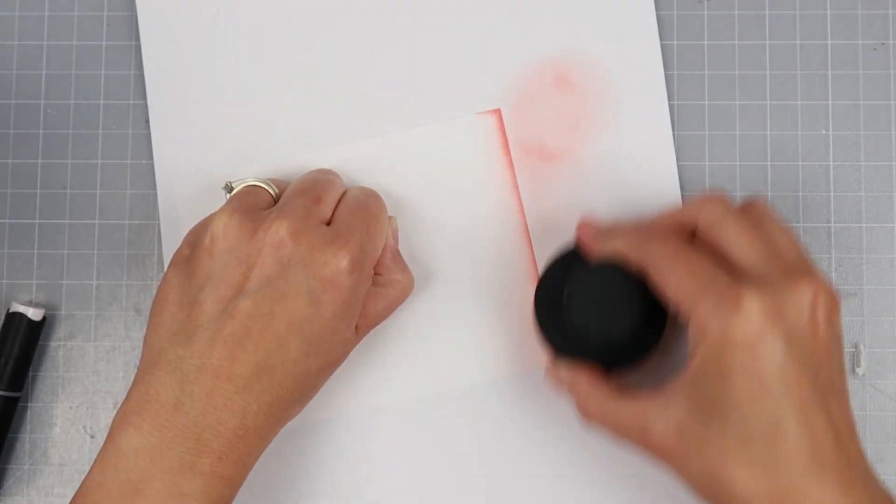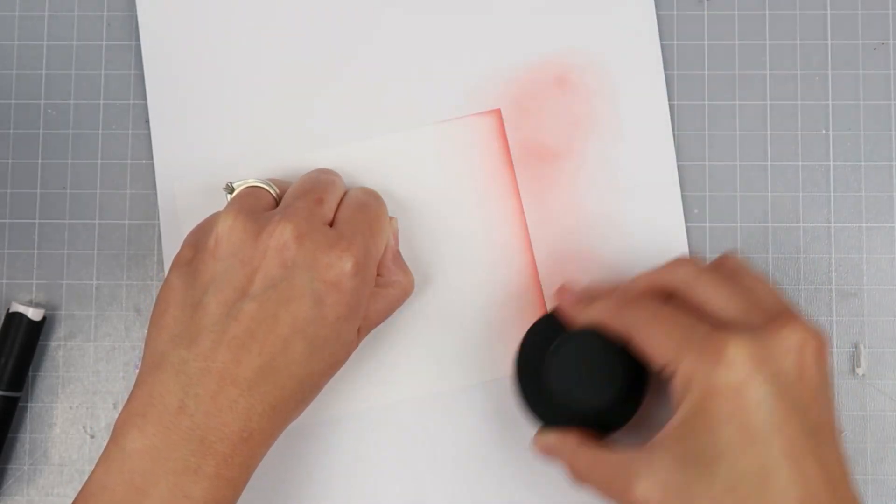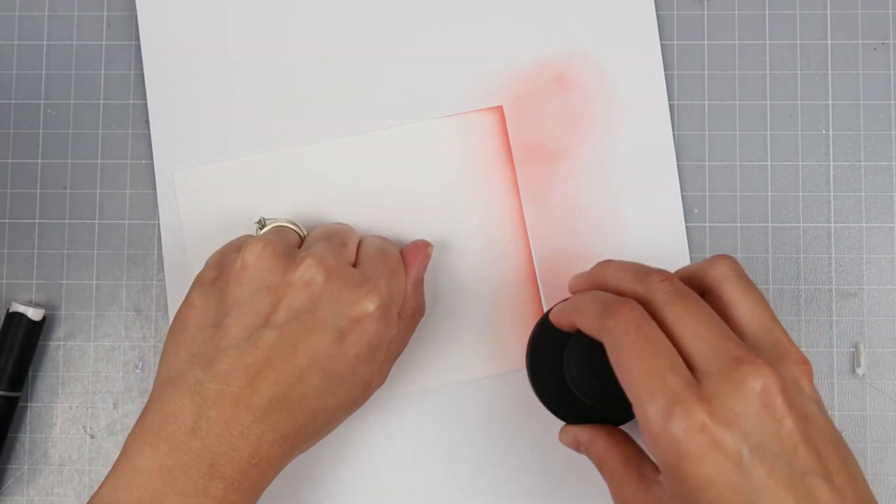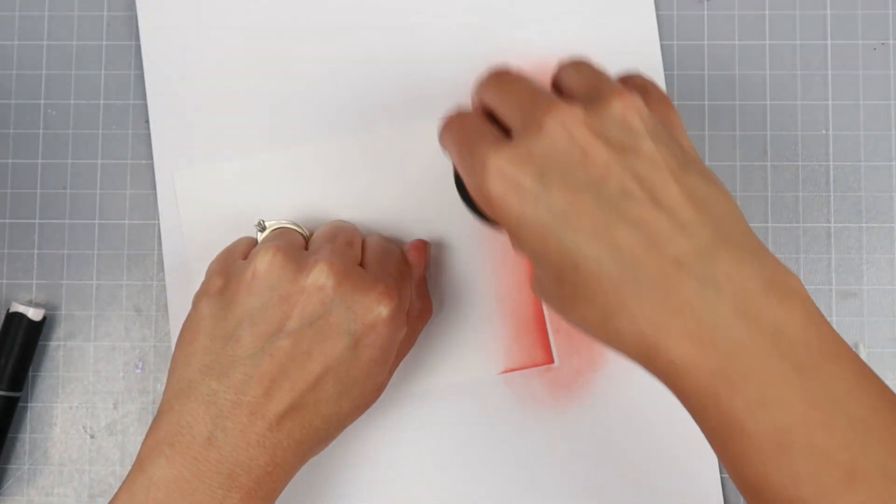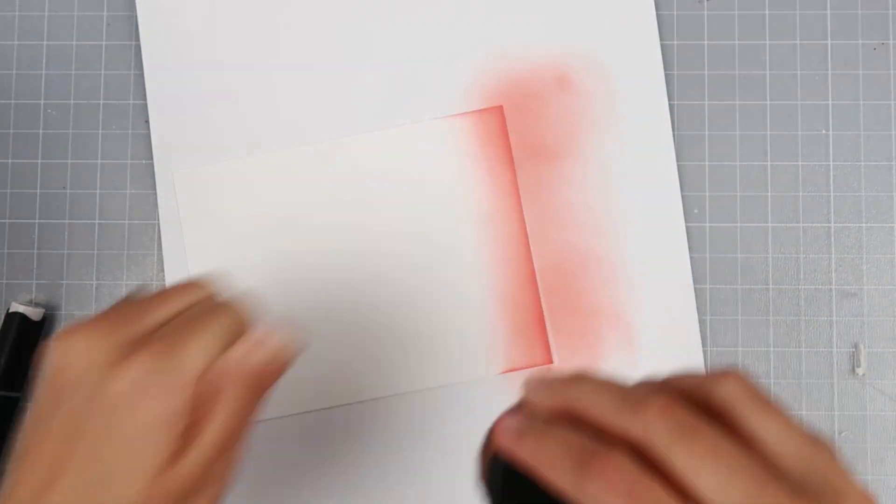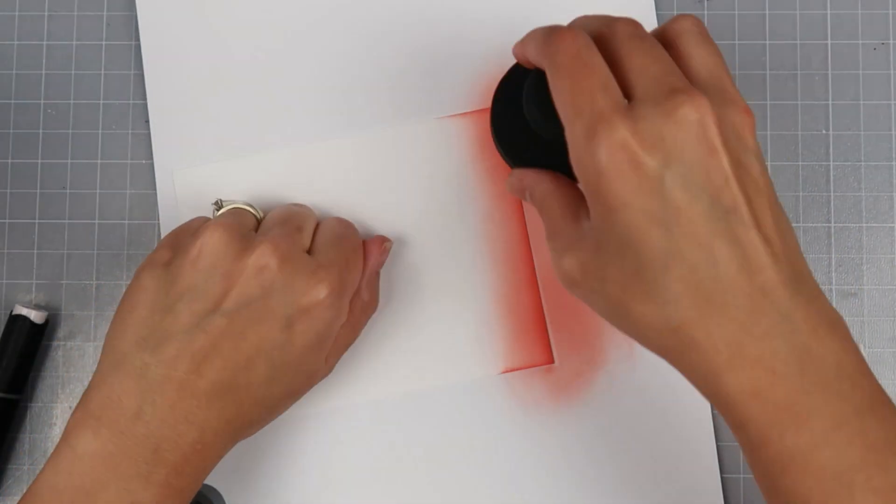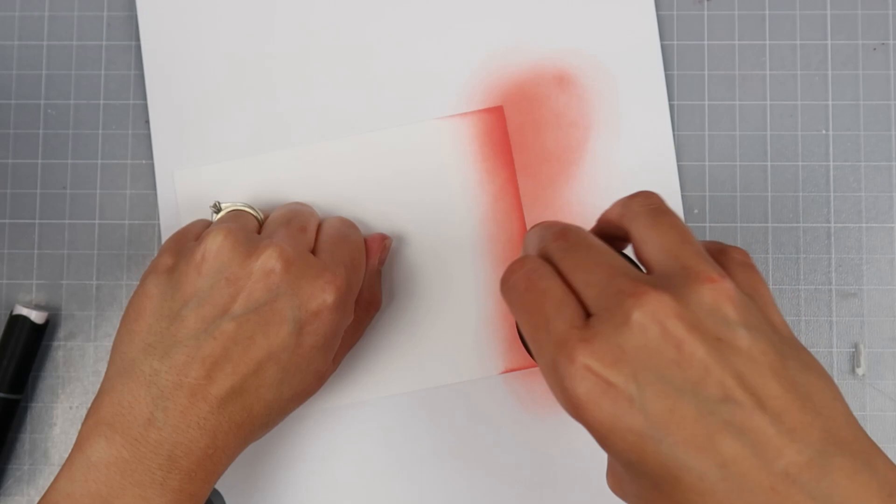Hey everybody, this is Abby. Today we're doing a rainbow card and I'm spreading some distress oxide inks onto cardstock. We're going to be making a rainbow card, so I'm just spreading it on there.